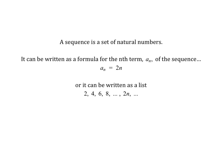A sequence is simply a set of natural numbers. It can be written in a few different ways — as a formula for the nth term, which we call a_sub_n. I like to call n the place in line, so if n equals 1 it's the first term, and a_sub_n is the actual term. You can also write the sequence as a list: 2 times 1 is 2, 2 times 2 is 4, 2 times 3 is 6, and so on.